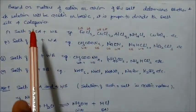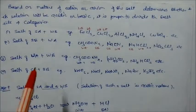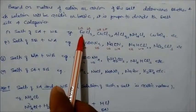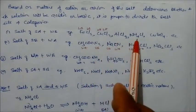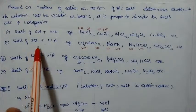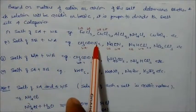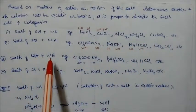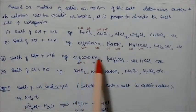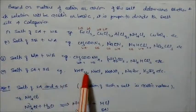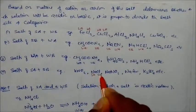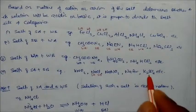Salts are divided into four categories: (1) Salt of strong acid and weak base — e.g., FeCl₃, CuCl₂, AlCl₃, ammonium chloride, CuSO₄; (2) Salt of strong base and weak acid — e.g., sodium acetate; (3) Salt of weak acid and weak base — e.g., ammonium acetate, ammonium carbonate, ammonium bicarbonate; (4) Salt of strong acid and strong base — e.g., KNO₃, NaBr, sodium nitrate, potassium sulfate.